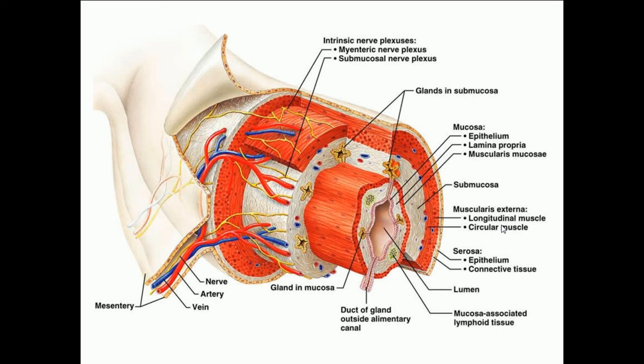The large intestine has these layers, but in its muscularis, the outer longitudinal layer of muscle forms three distinct bands called taeniae coli. The rest of the colon is gathered to fit these bands, giving the colon a puckered appearance. The puckers or pockets are called haustra, which provide for more surface area within the colon.